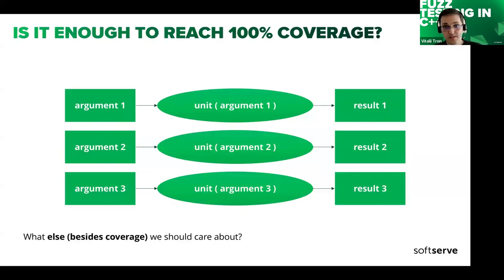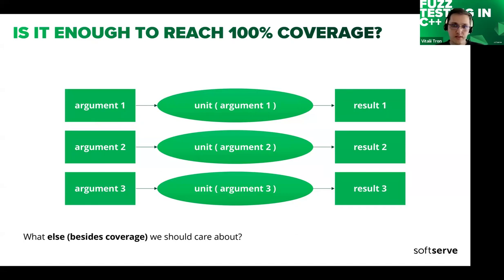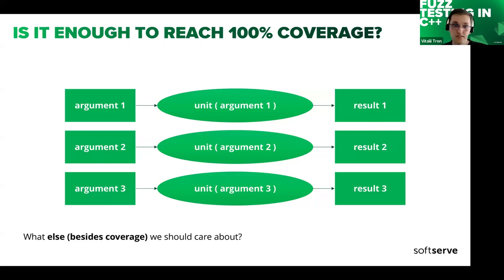The primary indicator of testing efficiency is code coverage. Our goal is to cover as much of our code as possible — not necessarily 100%, but we aim to get as close to that figure as we can. To achieve this, we generate various arguments and expected results, crafting multiple test cases to cover the code as thoroughly as possible.